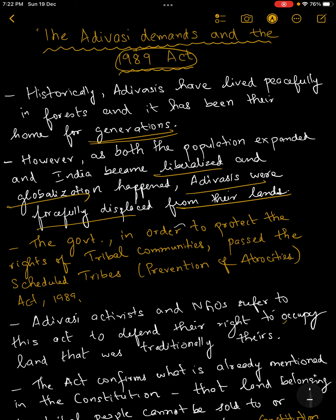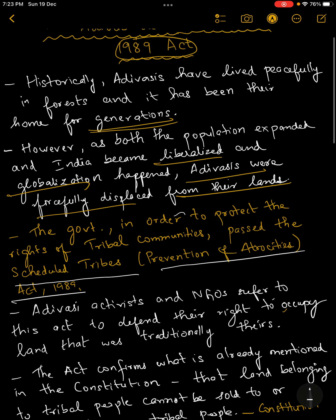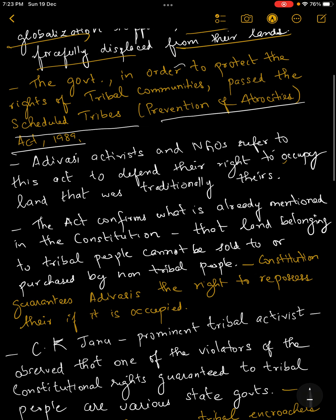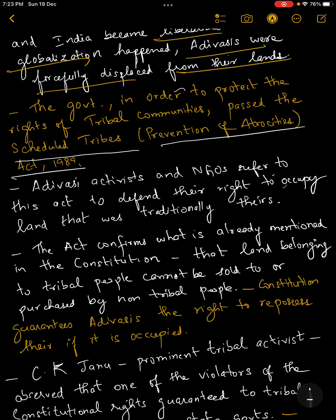The constitution guarantees the protection of individual liberties under Fundamental Rights, and of course tribals form an integral part of the social fabric of this nation. In order to protect their rights, the central government passed the Scheduled Tribes Prevention of Atrocities Act of 1989 — just like the Scheduled Castes Prevention of Atrocities Act. We will not be dealing with all the nitty-gritties of this act, but let us look at what it pertains to.